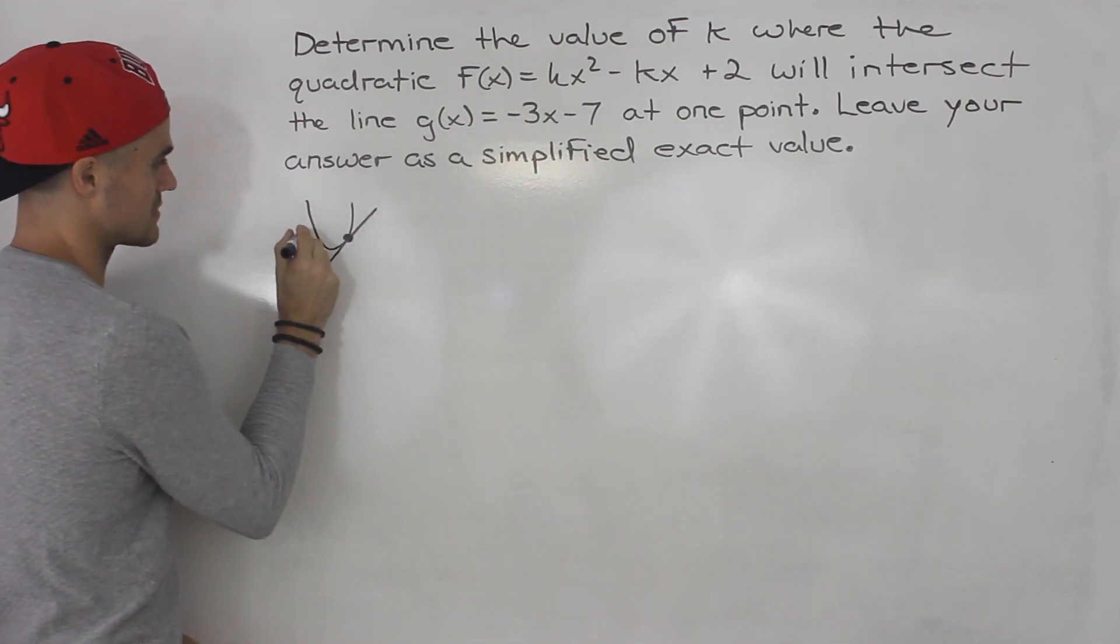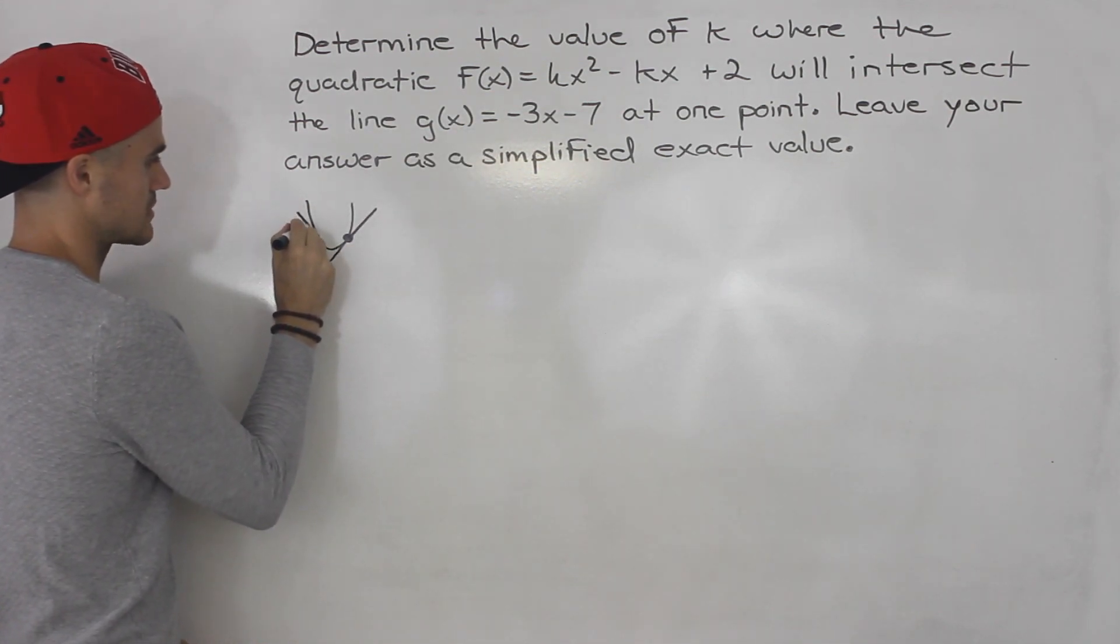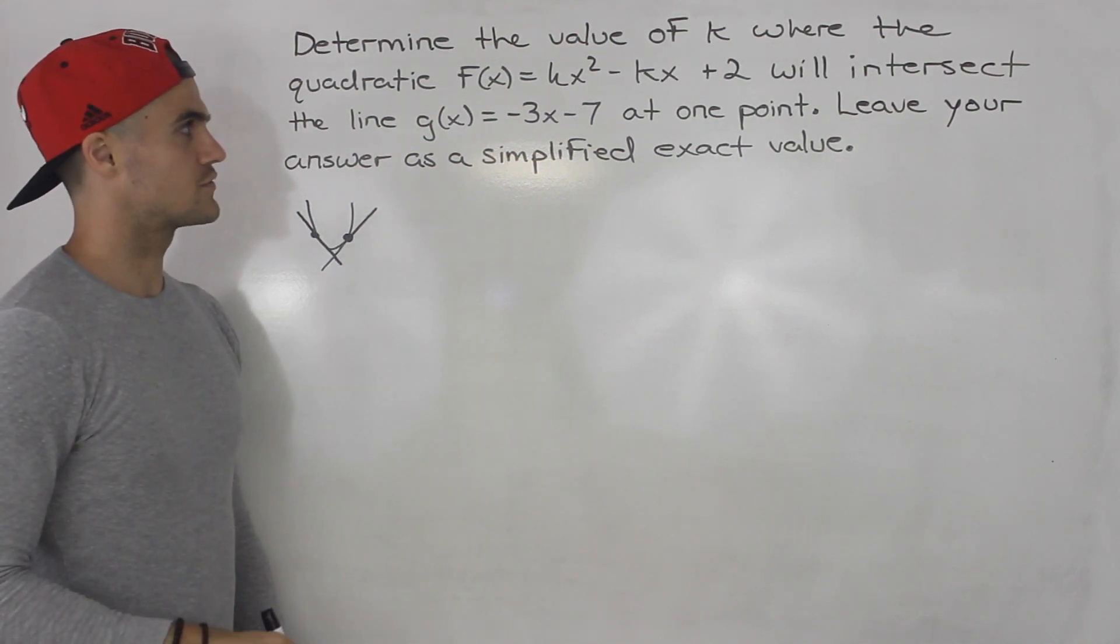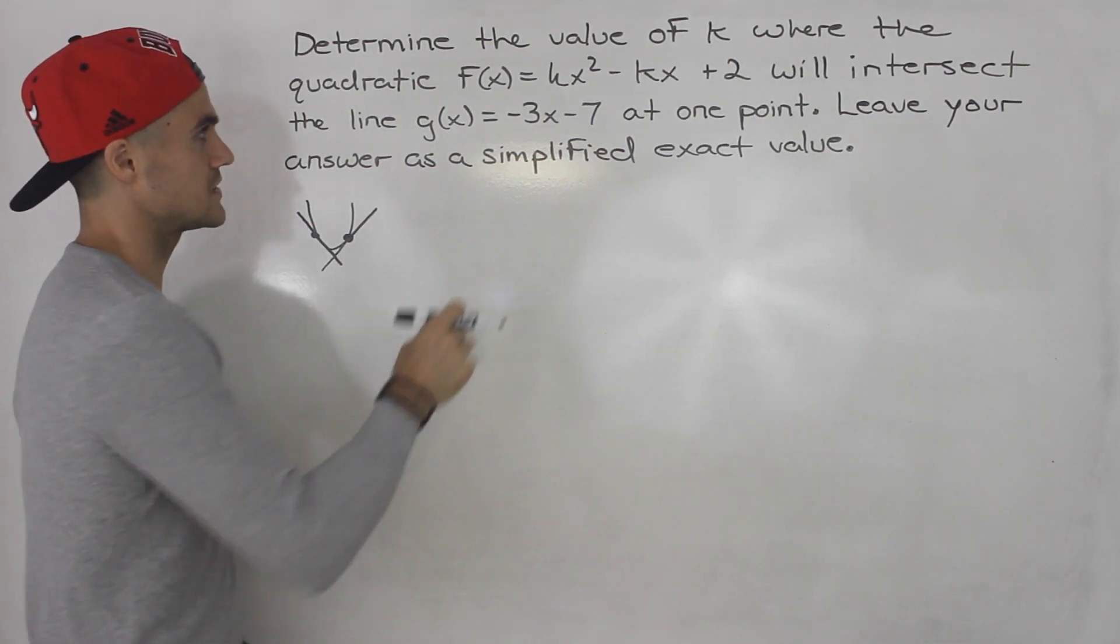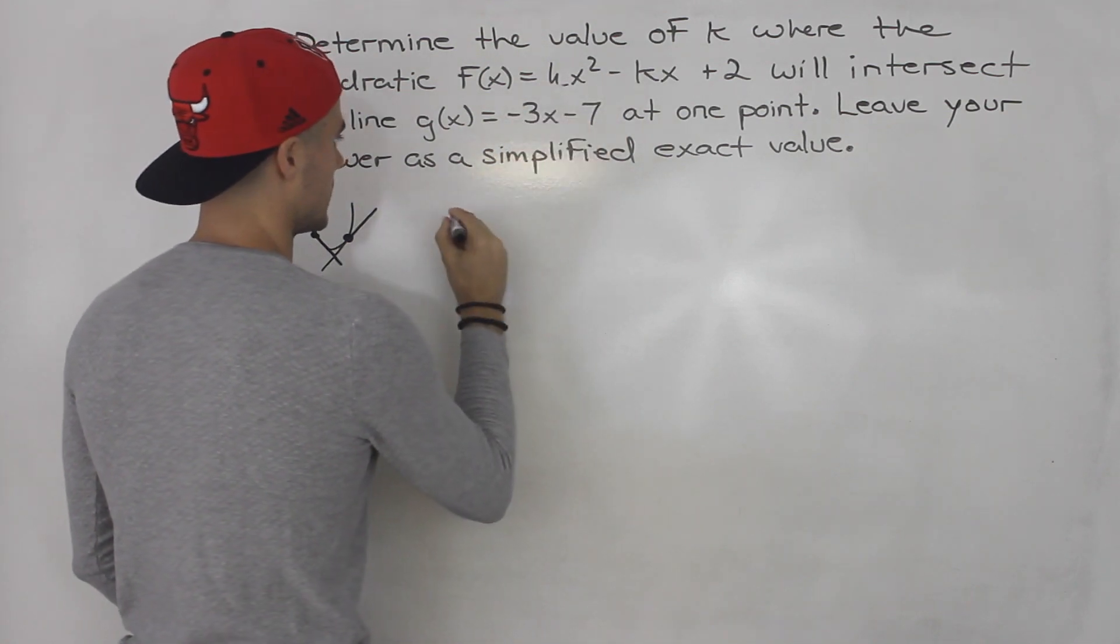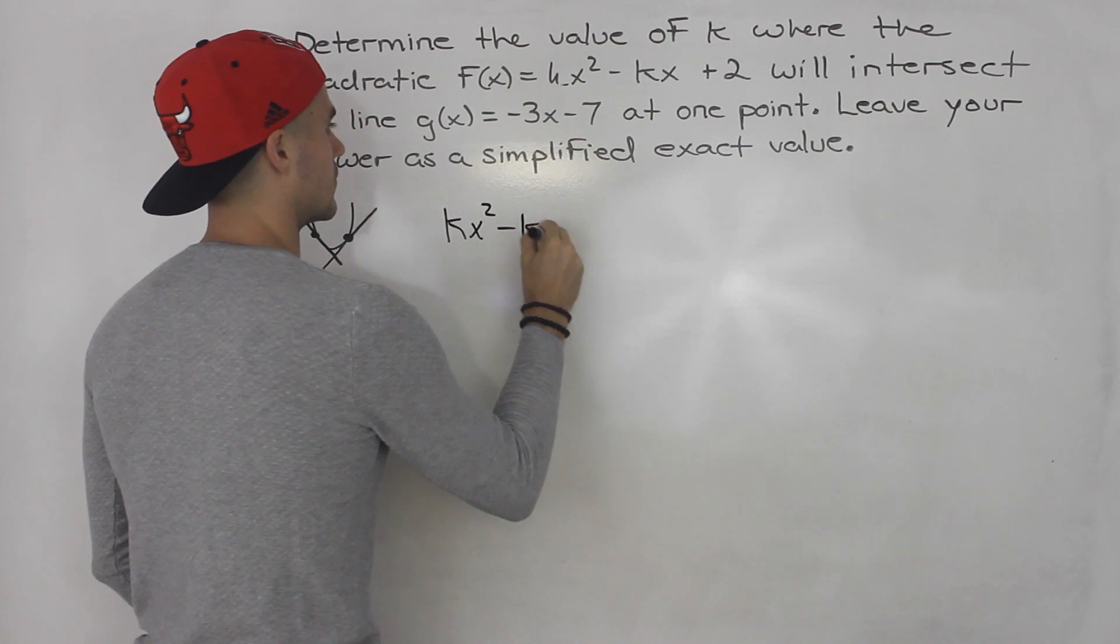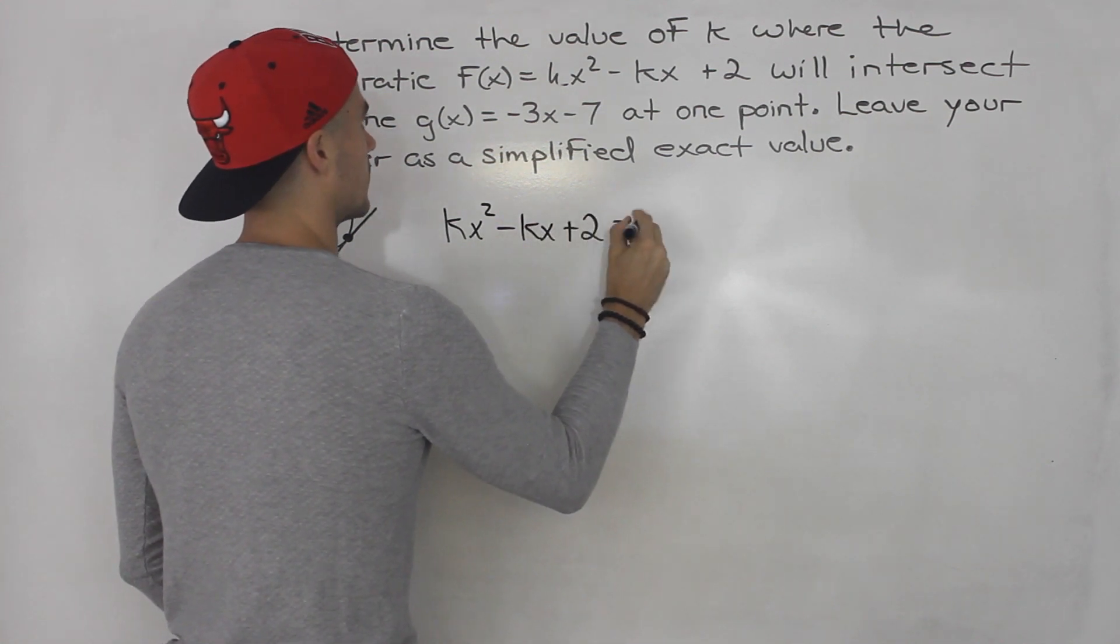In this case, actually, the line has a negative slope, so it looks something like this. But anyway, you get what I'm saying. So if you remember from the lecture videos, how do we do these questions? We take the quadratic and make it equal to the line.